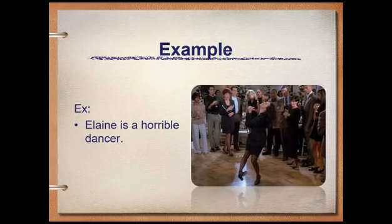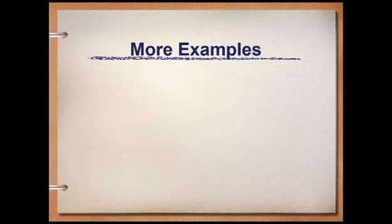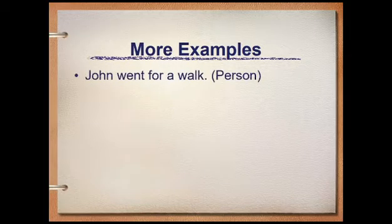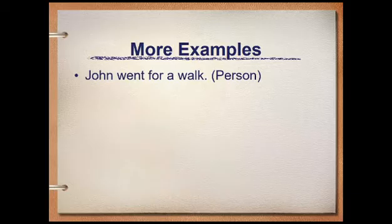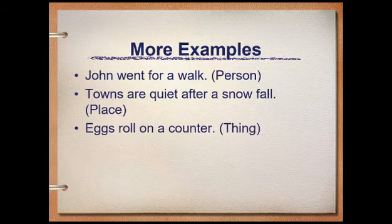Example: 'Elaine is a horrible dancer.' Elaine is our subject and 'is a horrible dancer' is our complete predicate. More examples of simple sentences: 'John went for a walk.' John is our subject, 'went for a walk' is our complete predicate. Second example: 'Towns are quiet after a snowfall.' Towns is the subject and 'are quiet after a snowfall' is our complete predicate.